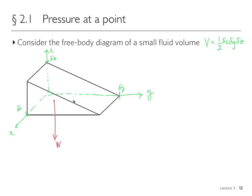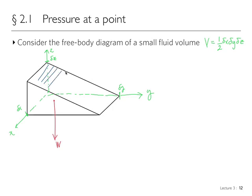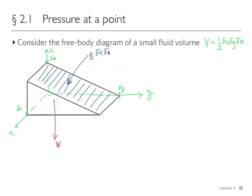For the pressure forces, we look at each wall. On this top inclined surface of the wedge, we have a pressure force equal to PS — we call it PS because it acts on an inclined plane and we don't yet know its value — times the area, which is Delta X times Delta S.